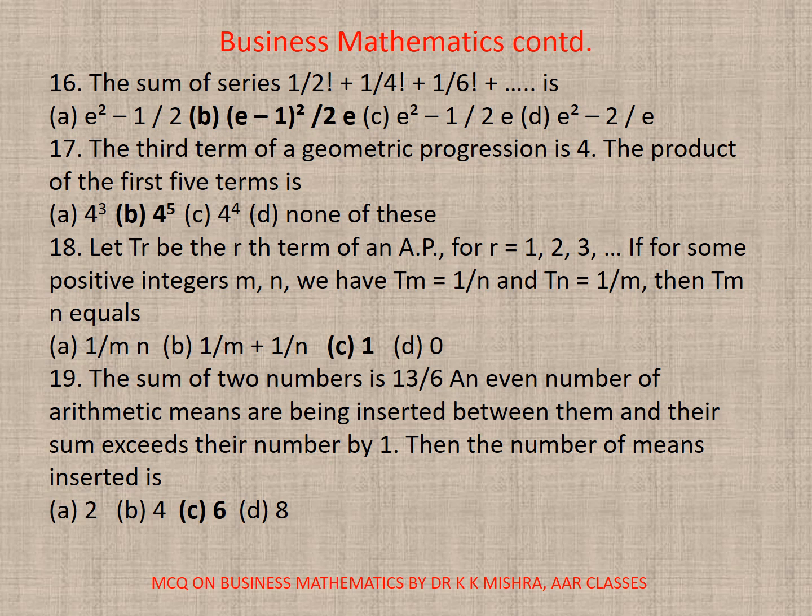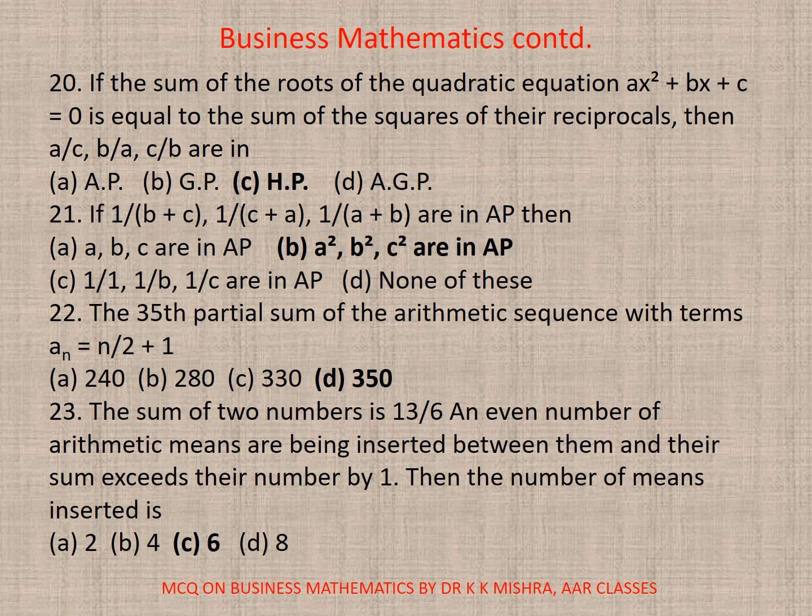Question 19. The sum of two numbers is 13/6. An even number of arithmetic means are being inserted between them, and their sum exceeds their number by 1, then the number of means inserted is, here correct option is C, 6. Question 20. If the sum of the roots of the quadratic equation AX² + BX + C = 0 is equal to the sum of the squares of their reciprocals, then A/C, B/A, C/B are in, here correct option is C, HP.